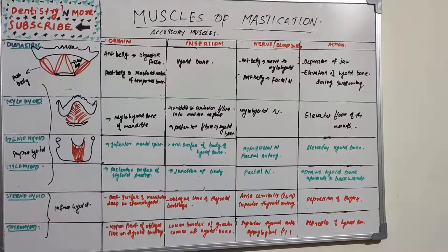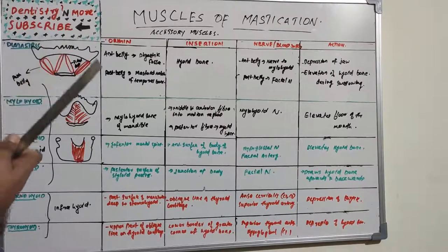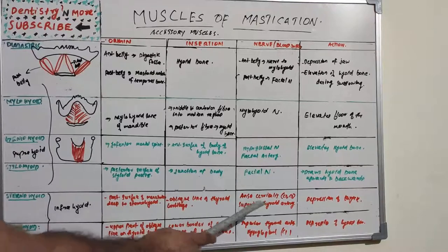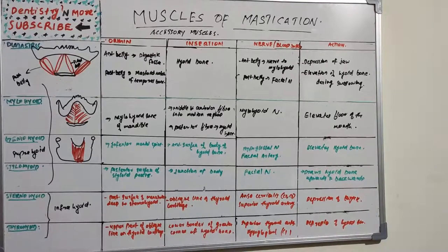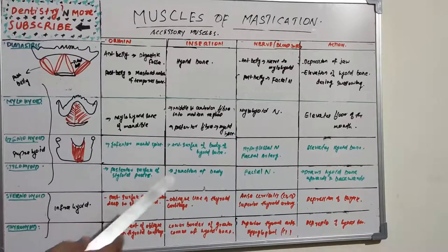The sternohyoid originates from the posterior surface of the manubrium deep to the sternohyoid and inserts into the oblique line of the thyroid cartilage. Arterial supply is the superior thyroid artery. Nerve supply is from the ansa cervicalis, C2 and C3 branches. Its action is depression of the larynx. The thyrohyoid originates from the upper part of the oblique line of the thyroid cartilage and inserts into the lower border of the greater cornu of the hyoid bone. Arterial supply is the superior thyroid artery, nerve supply is the hypoglossal nerve C1, and it acts to depress the hyoid bone.